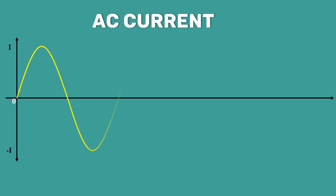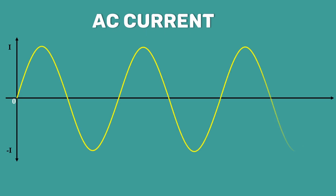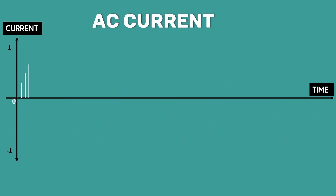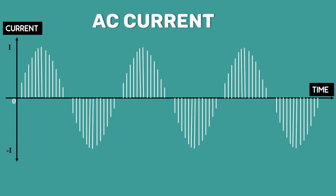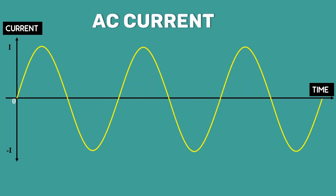Usually, the AC current is represented as a sine wave. Here, the x-axis represents the magnitude of the current and the y-axis represents the time. In this waveform, each point represents the magnitude of the current at that particular time. Look at this waveform — the current oscillates periodically between the positive and the negative value.